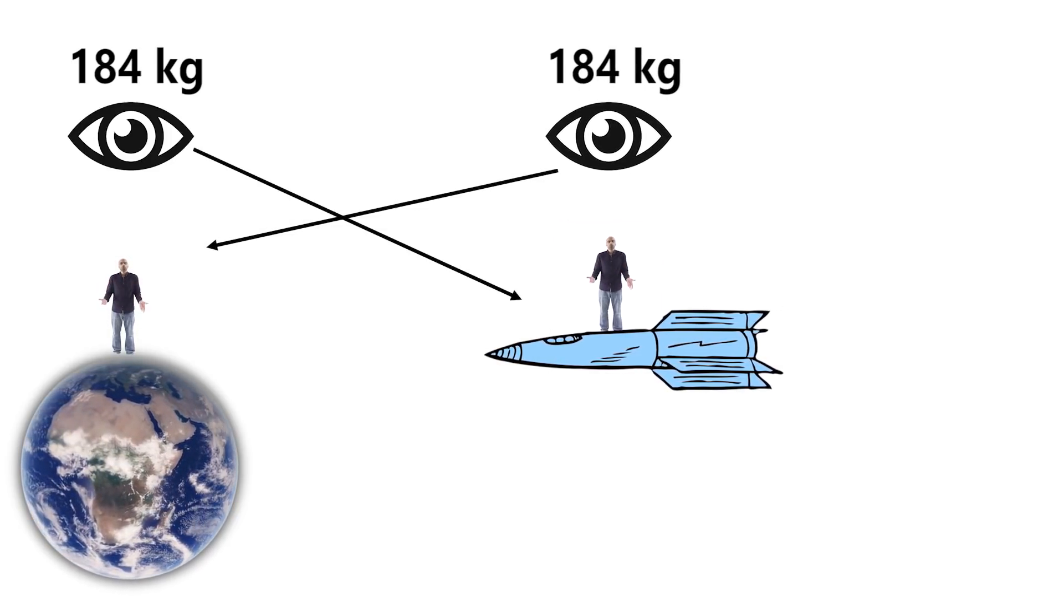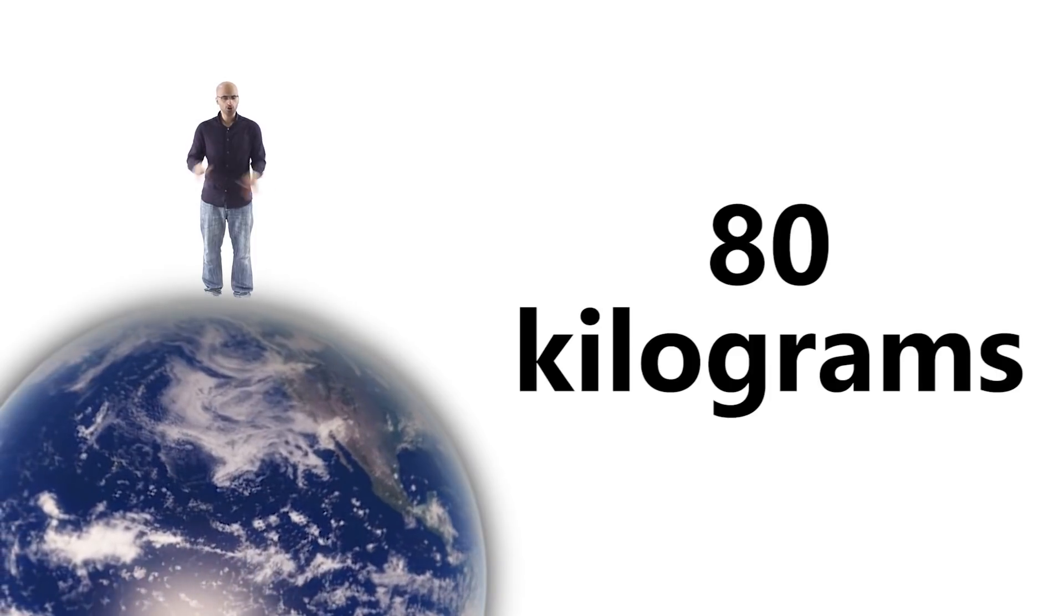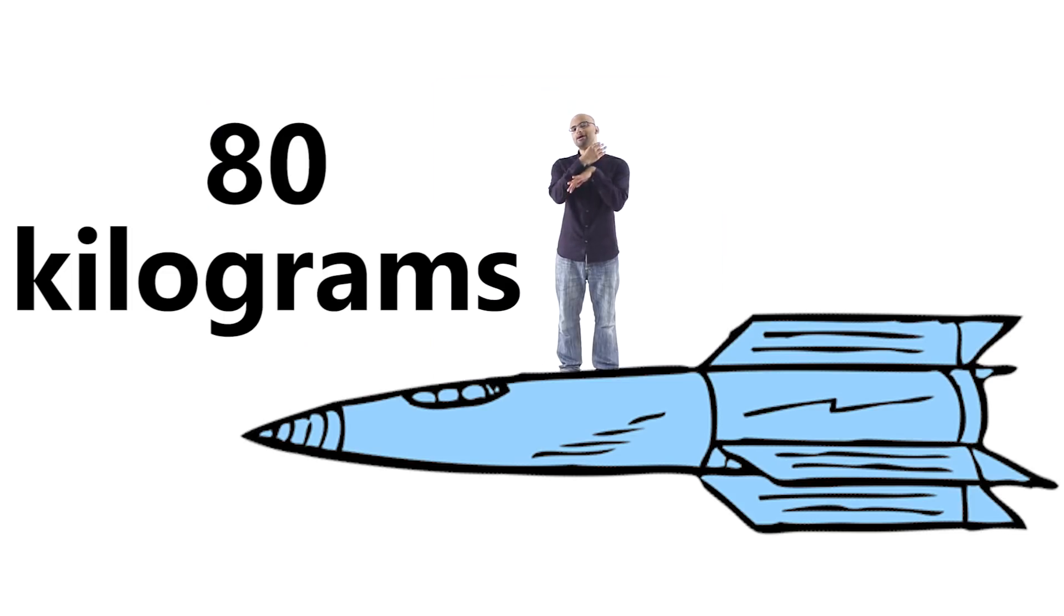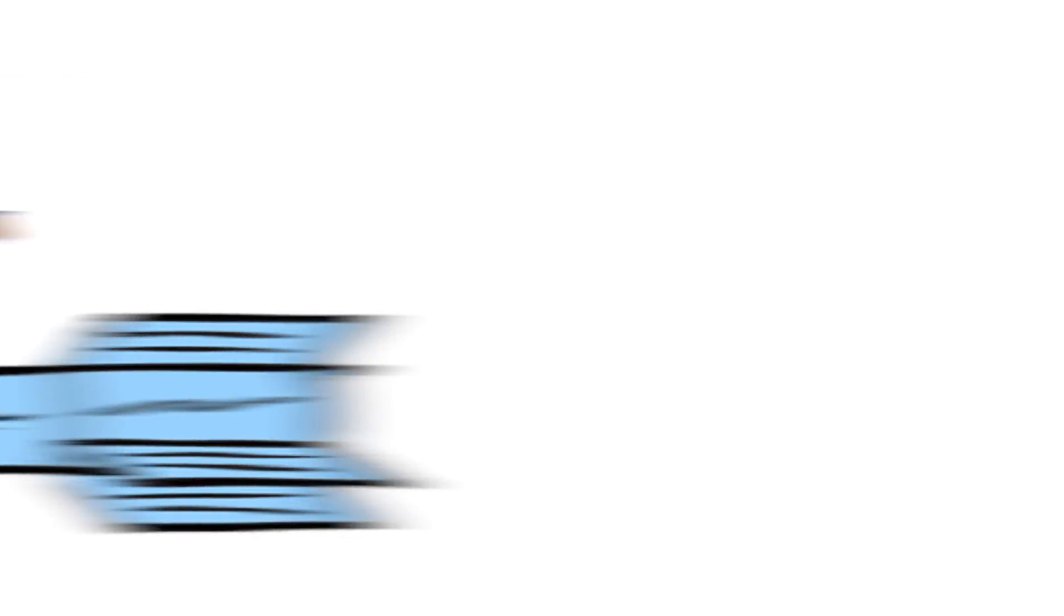However, from our own point of view, our mass is always 80 kilograms, no matter how fast we are moving. The use of relativistic mass in today's physics is actually discouraged. Even Einstein himself wasn't too fond of the idea of relativistic mass.